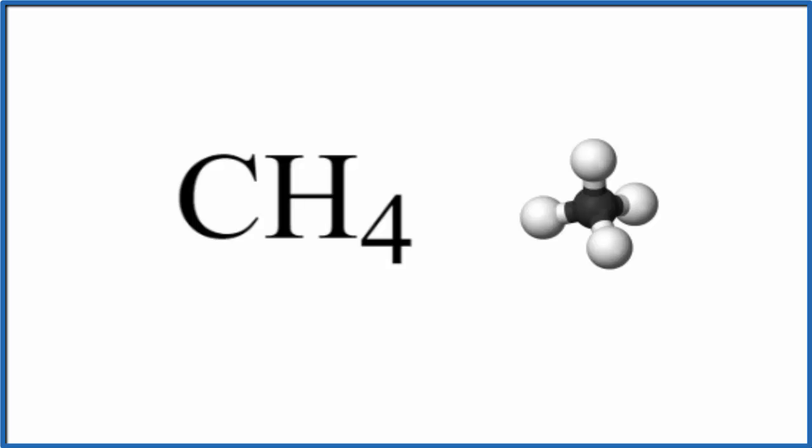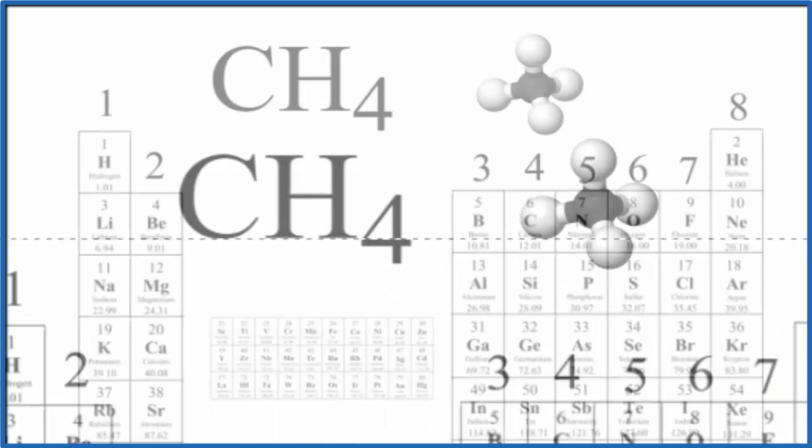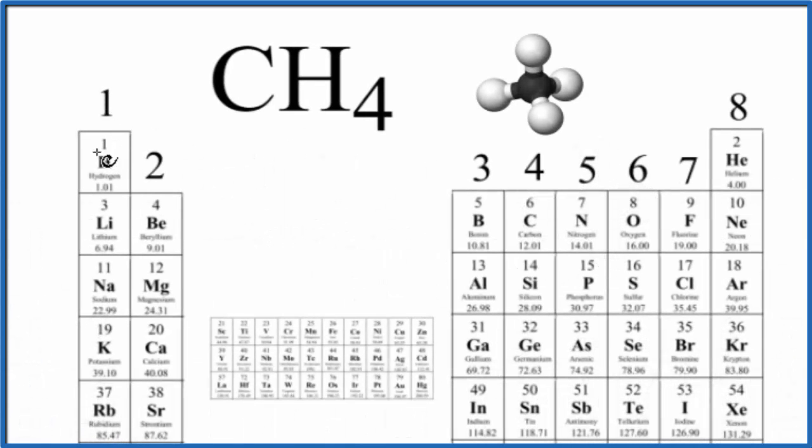So let's count the valence electrons up using the periodic table here. In this table it's organized - group 1 has one valence electron, all these have 2, we skip the transition. Group 3, also called 13, has 3 valence electrons, and then group 4, there's our carbon. So carbon in group 14, sometimes called 4, has 4 valence electrons, and then hydrogen over here, group 1, like the elements in group 1, has 1 valence electron. 4 hydrogens, so we multiply it by 4, and we get a total of 8 valence electrons for methane here, CH4.